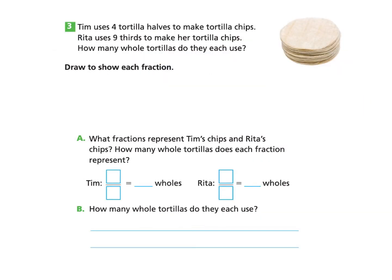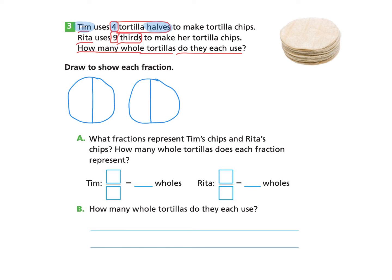Let's take a look at the next page, page 371, Part 3. Tim uses four tortilla halves to make tortilla chips. Rita uses nine thirds to make her tortilla chips. How many whole tortillas do they each use? Draw to show each fraction. I'm going to draw Tim's first — he uses four halves, so I'll draw four halves for Tim. Then I look at Rita's — she uses nine thirds — so I will draw nine thirds to represent Rita.